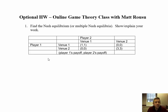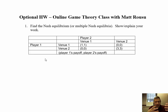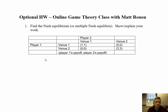A question many people could reasonably ask is: why would they want to end up at venue one, since the payoffs are only one each while venue two gives three each? That's a fair question, but it doesn't change the fact that venue one is an equilibrium. If they happen to find themselves there, it's stable — neither would want to unilaterally change from venue one to venue two. So this game has two Nash Equilibria: both going to venue one or both going to venue two.